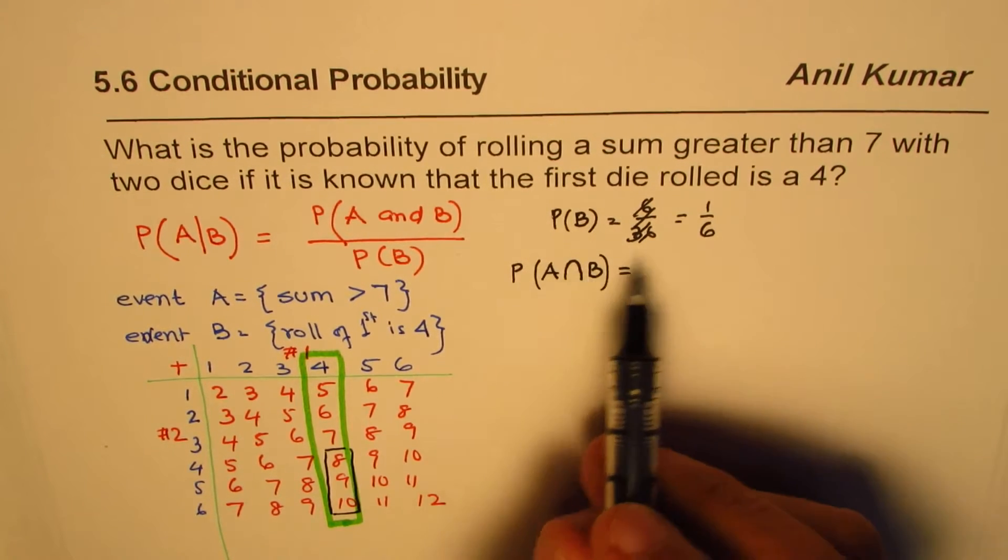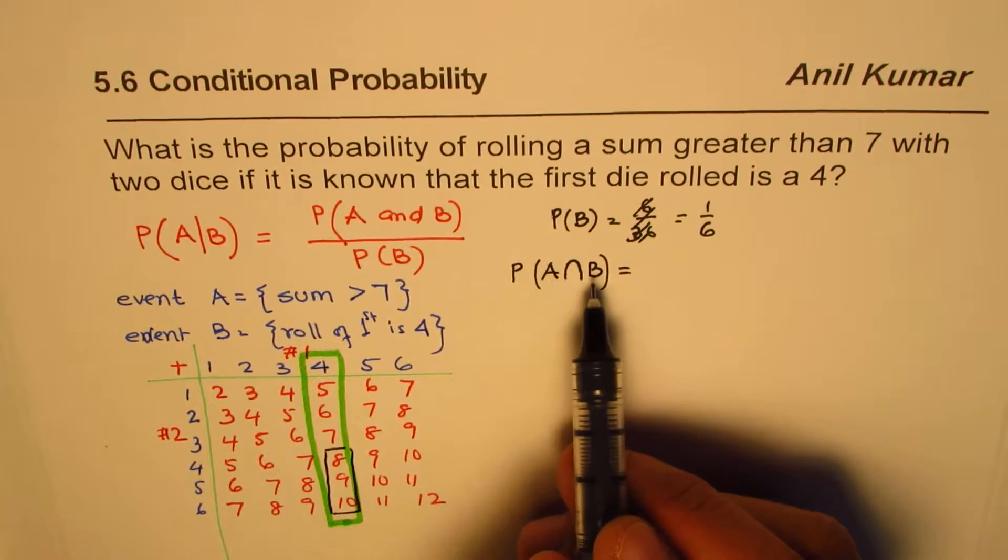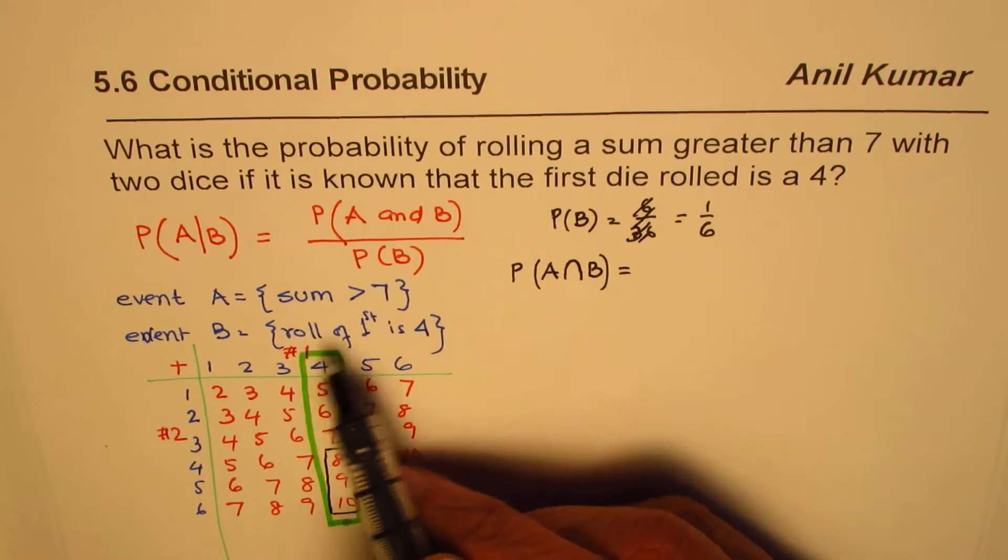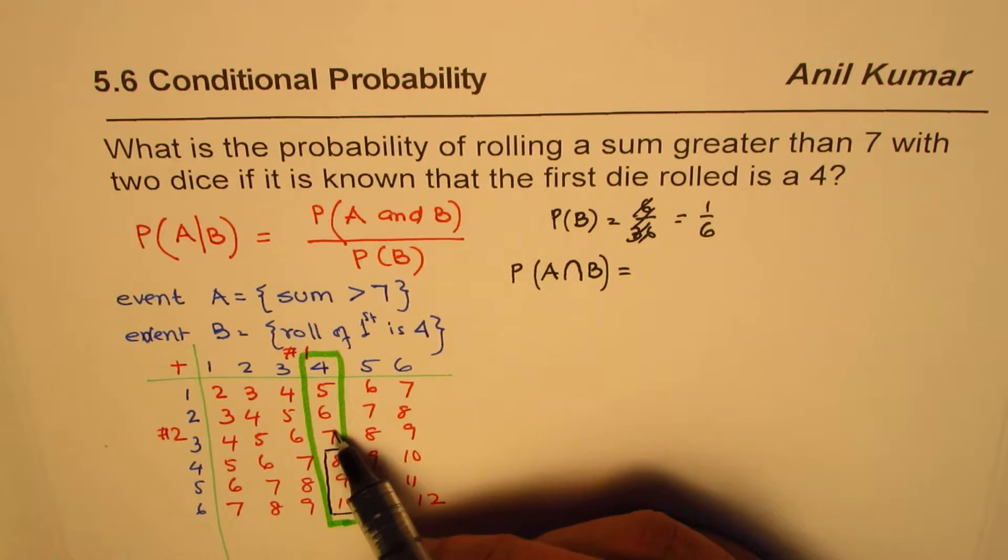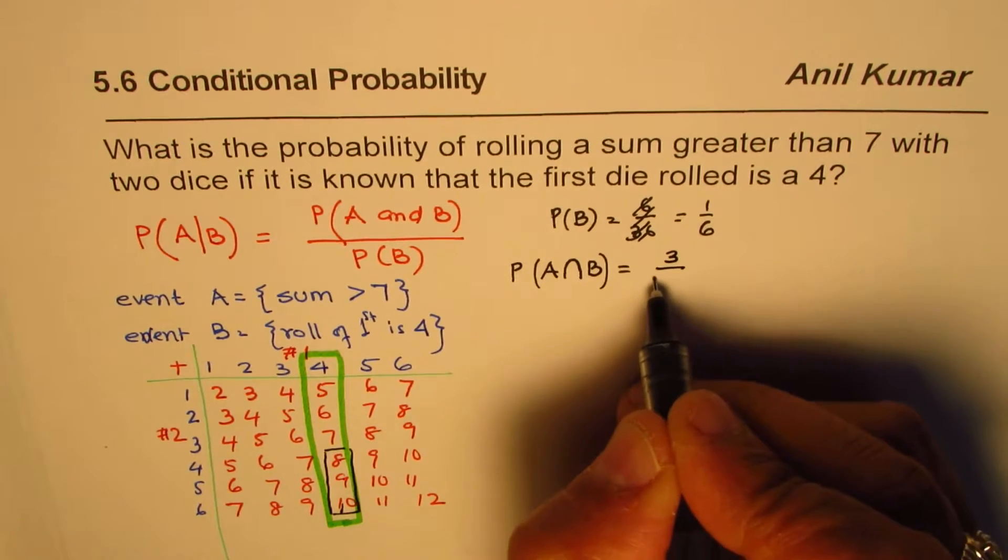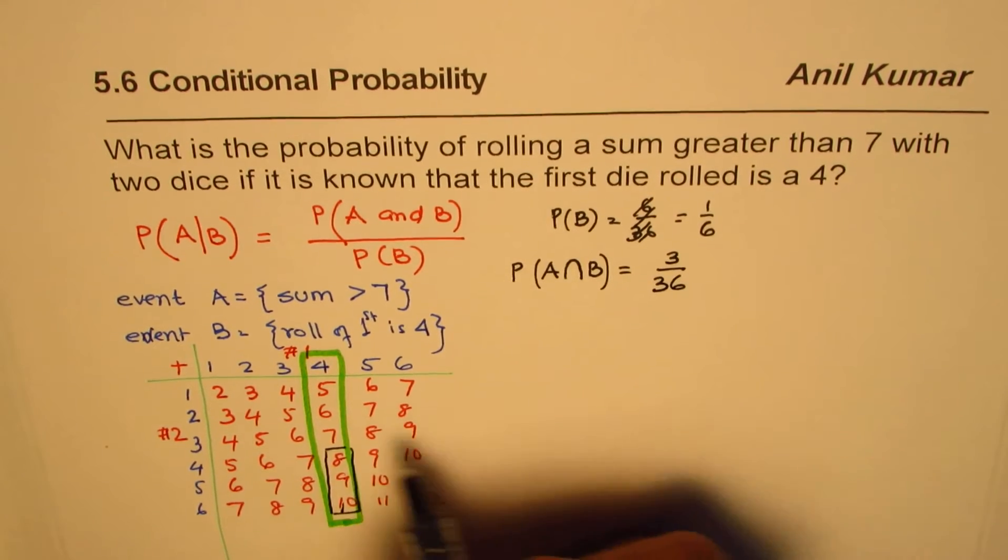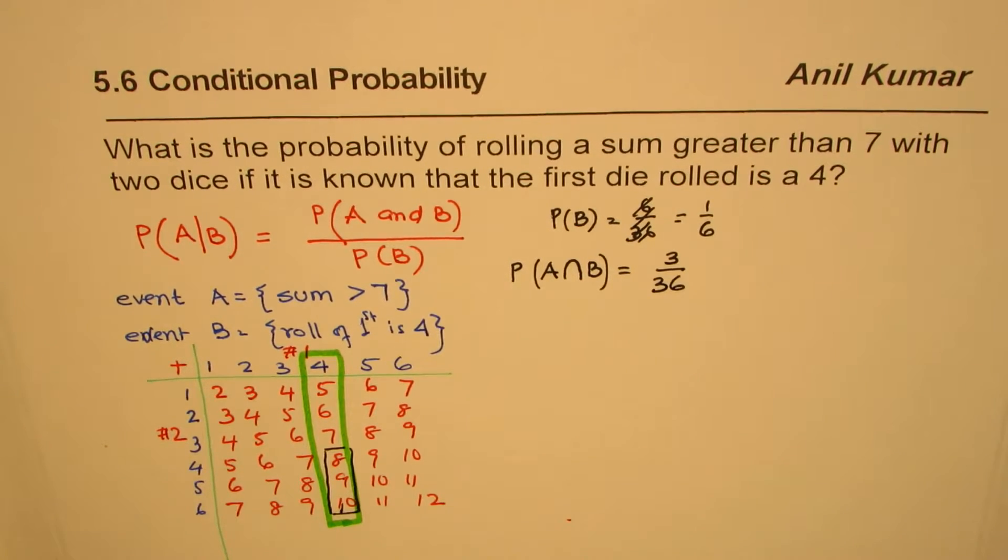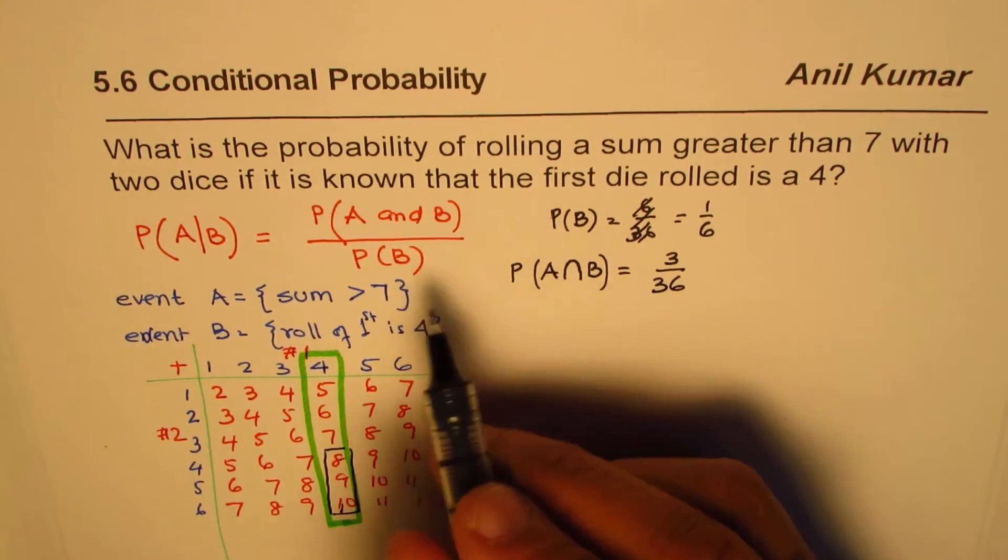So now the probability of both A and B happening, that is first die gave us 4, and the second die gave us a sum more than 7 is 1, 2, 3 out of 36. So that is how you can get your probabilities for each event.